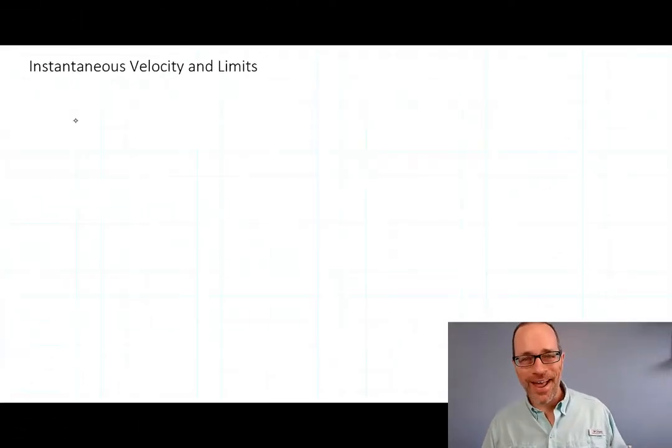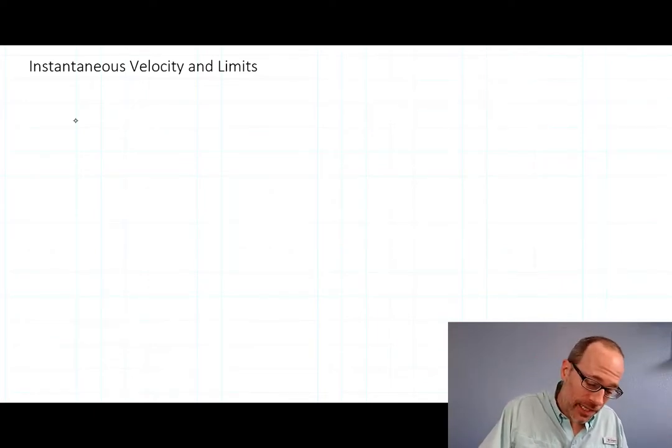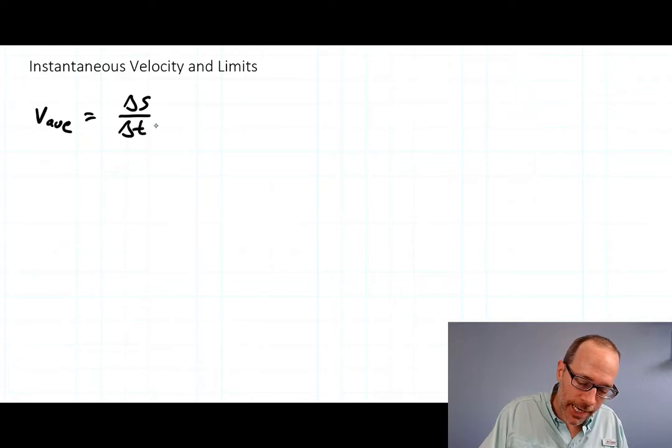All right, welcome back. Instantaneous velocity. All right, well we know what average velocity is. Remember it was just the change in position all over the change in time. Remember that was s at b minus s at a all over b minus a.